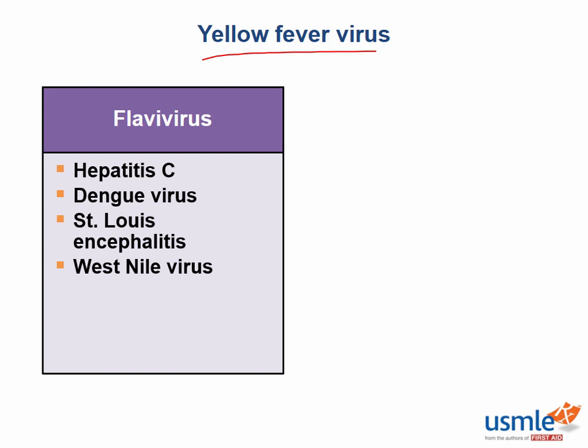The dengue fever virus causes dengue fever, or more seriously can cause dengue hemorrhagic fever — a potentially fatal disease characterized by fever as well as a coagulopathic state where patients can heavily bleed and present in hemorrhagic hypovolemic shock.